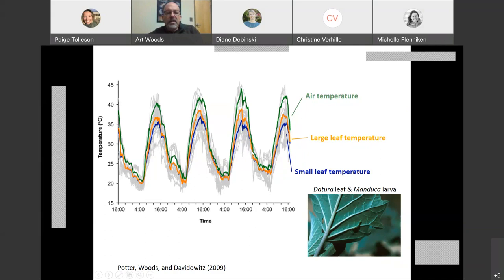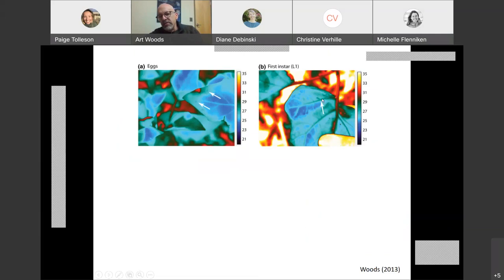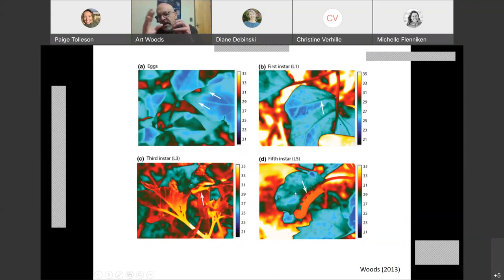Here's a set of thermal images that illustrate the size dependence of the thermal experience of Manduca. These two little dots are eggs of Manduca and you can barely see them because they're essentially the same temperature as the surrounding leaf tissue. Here's a first instar caterpillar that just recently hatched hanging onto a vein. It too is a very similar temperature to the leaf. But once the caterpillars start to grow large enough that they project significantly away from the leaves, this is a third instar and a fifth instar, their temperatures are much hotter than the leaf surface. That's because they've essentially grown out of the cool boundary layer that's right against the leaf and they're integrating conditions on broader spatial scales.